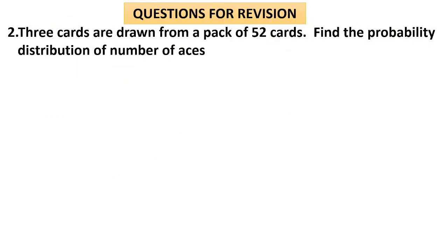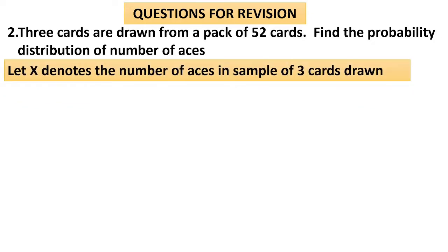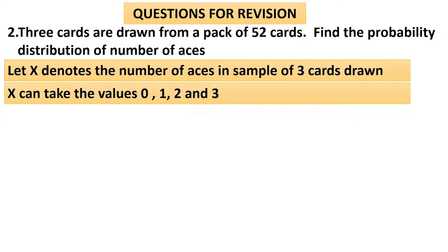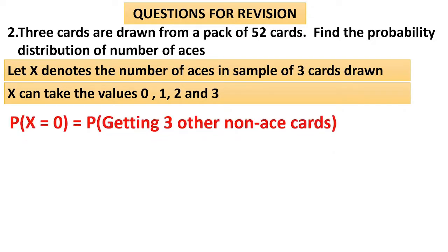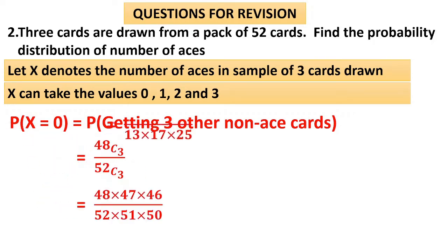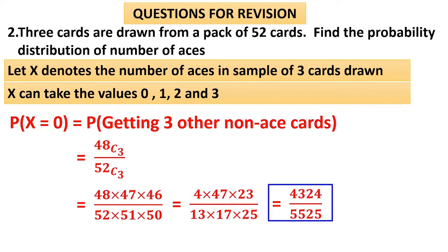Question 2: Three cards are drawn. Find the probability distribution of the number of aces. Let X denote the number of aces; X can take values 0, 1, 2, and 3. For P(X=0), getting 3 non-ace cards: there are 48 non-ace cards, so the probability is 48C3 / 52C3, which simplifies to 4324 / 5525 — multiply out and keep ready for the table.